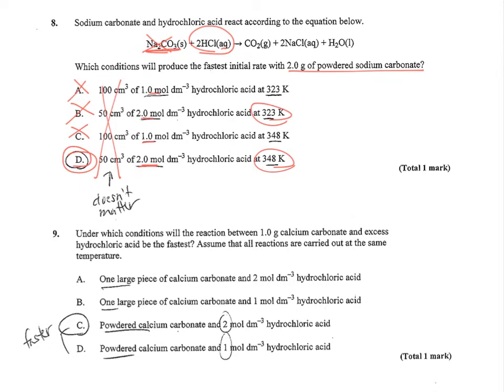Number 9: under which conditions will the reaction between one gram of calcium carbonate and excess hydrochloric acid be fastest? Same equation. This time, hydrochloric acid is in excess. It's all about the calcium carbonate. One large piece or powdered, and powdered is definitely going to be faster. Even though it's in excess, more concentrated hydrochloric acid will increase frequency of collisions. So 2 molar and powdered calcium carbonate will be my fastest rate.